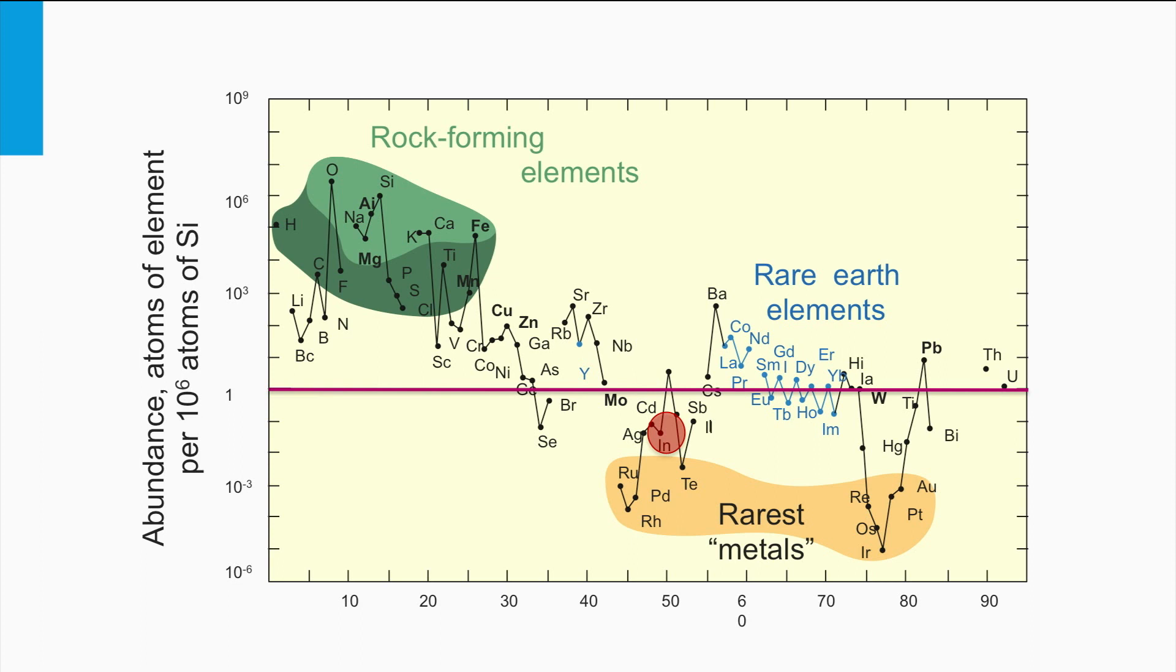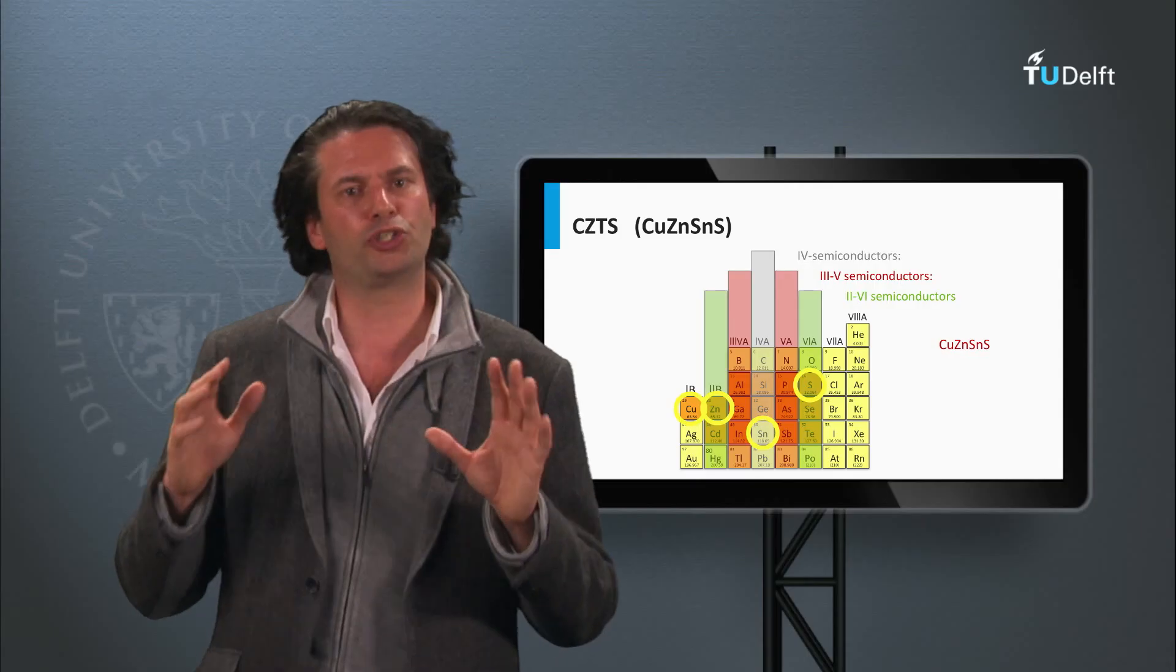Therefore, indium might be the limiting step to upscale the CIGS PV technology to future terawatt scales. In addition, the current display industry depends on indium as well, as ITO is integrated in many display screens.